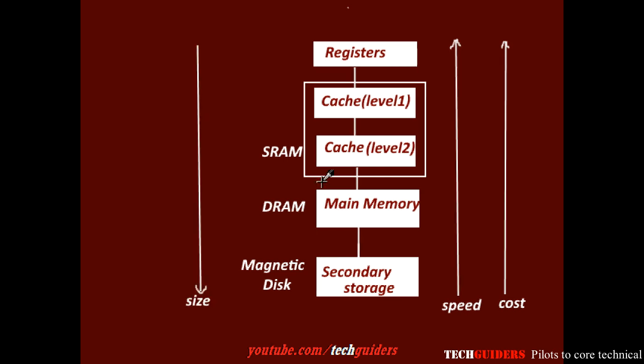So, to cope up with the speed of the processor, use this hierarchy of memory components in a proper way — without exceeding the budget and by satisfying both the size requirement and the speed requirements.